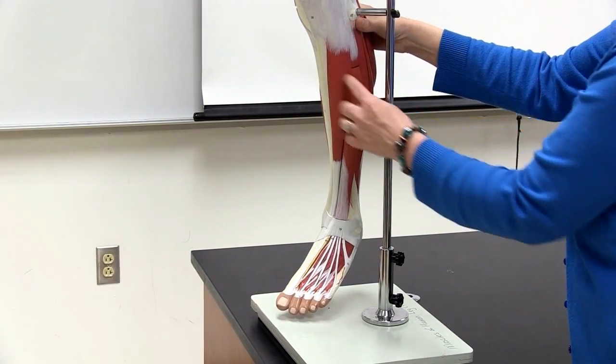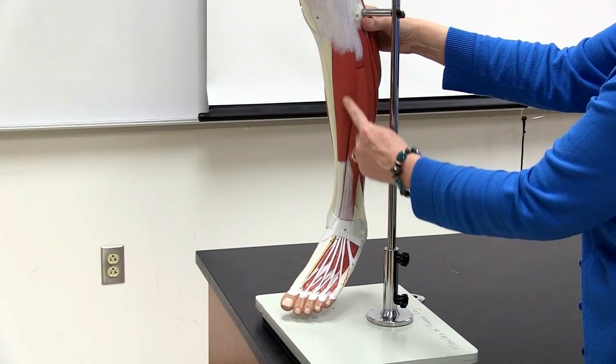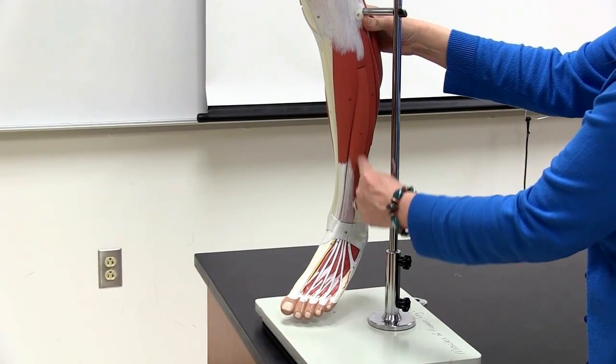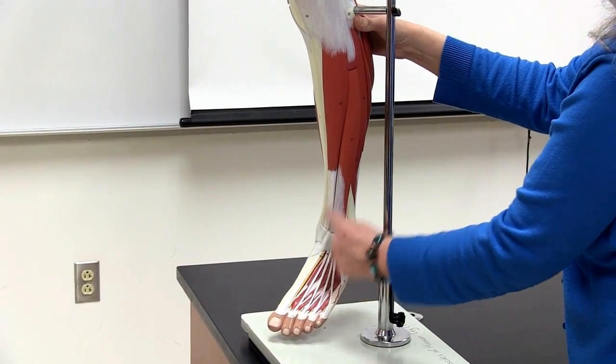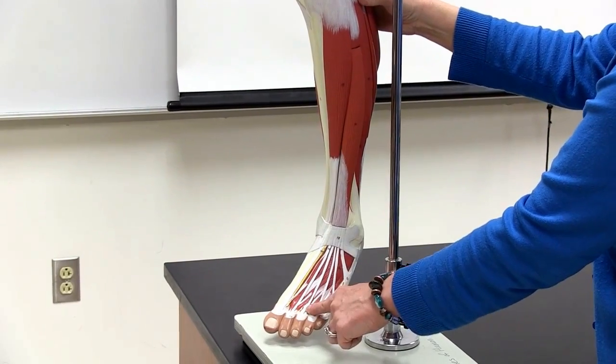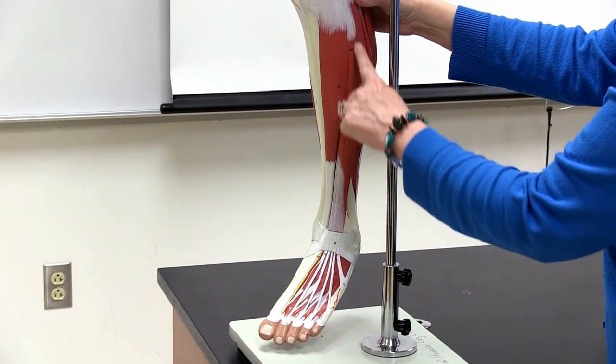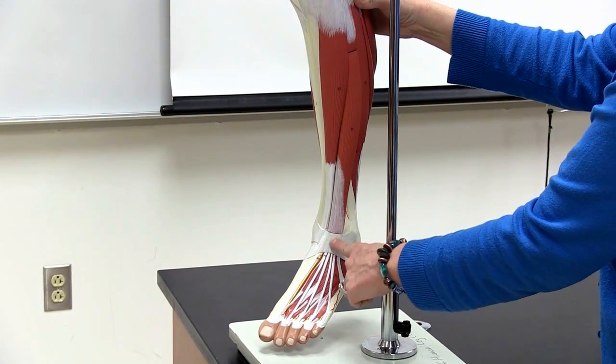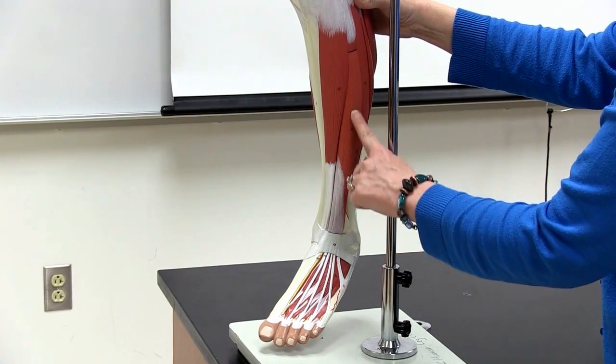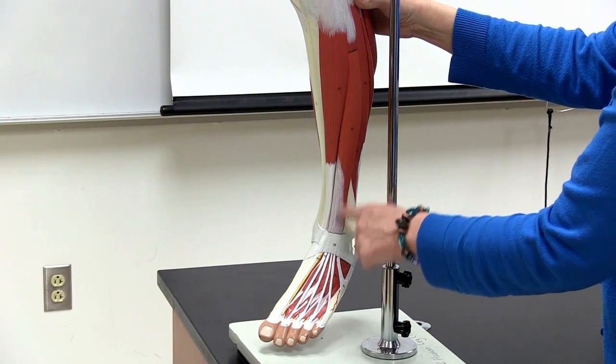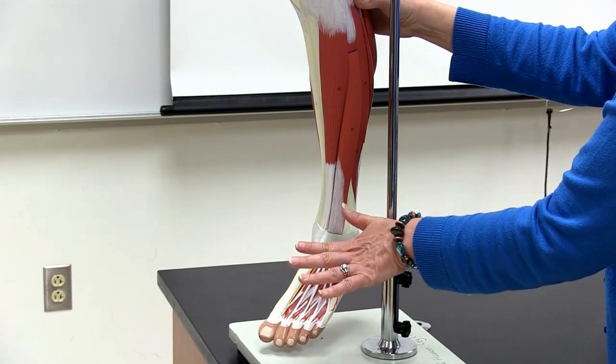As we come around, you see this next one right next to tibialis anterior. This one goes all the way to these tendons on the anterior side, top of the foot. This one is called extensor digitorum longus because it literally extends the toes.